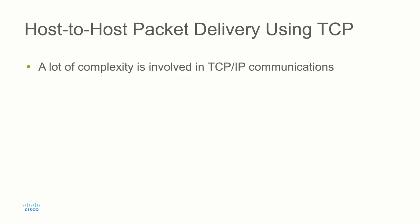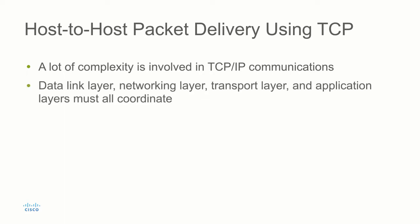There's quite a bit of complexity involved in TCP communications. When you think about it, you have a number of layers: the data link layer, the network layer, the transport layer, the application layer — all involved in this communication and they all have to coordinate with one another. You have MAC addresses at the data link layer, IP addresses at the networking layer, TCP at the transport layer, and ARP that sits between the data link and networking layer. These are just a few examples; there are other protocols and functions all happening in concert with one another.